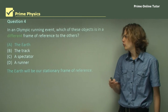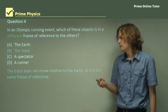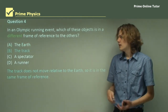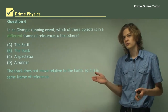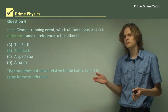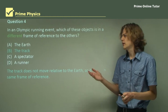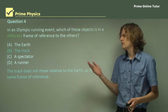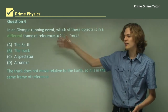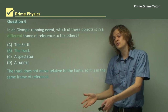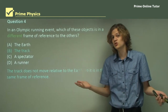Let's take a look at the other options. The track that the athletes are running on — relative to the Earth, the track isn't moving, because unless we have some crazy conveyor belt or aircraft carrier, we have a track that is affixed to the Earth, so it's in the same frame of reference — it's stationary, it's not moving.